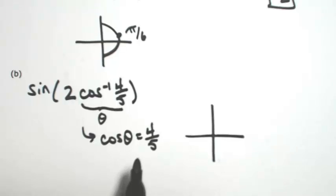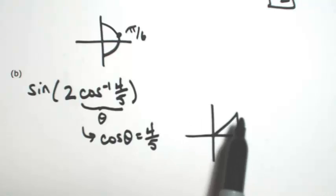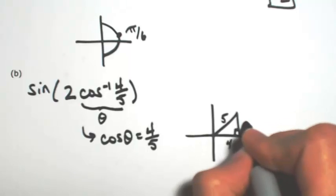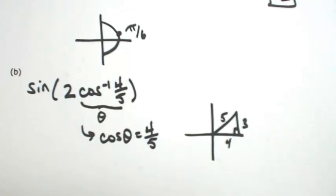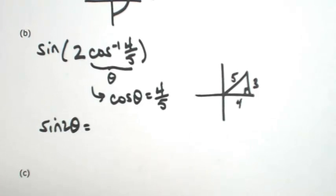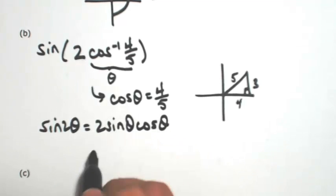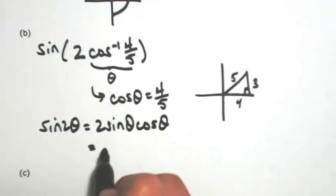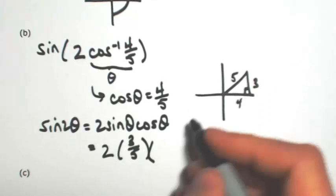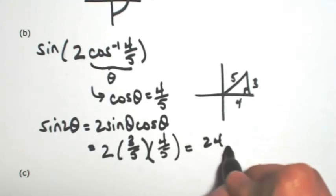I'm going to draw my triangle in the first quadrant because it's positive — cosine is positive, so it's got to be the first quadrant. Cosine is adjacent over hypotenuse, so the opposite side is going to be 3. So then this problem is really asking for the sine of 2 theta, which expands as 2 sine theta cosine theta. We know both of these: sine of theta is 3 over 5, and cosine of theta is 4 over 5, so we get 24 over 25.